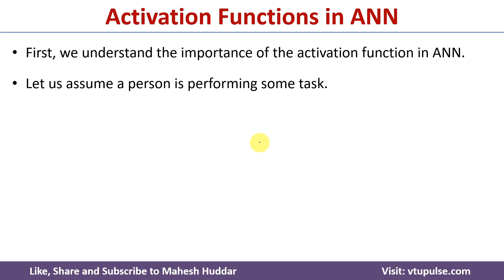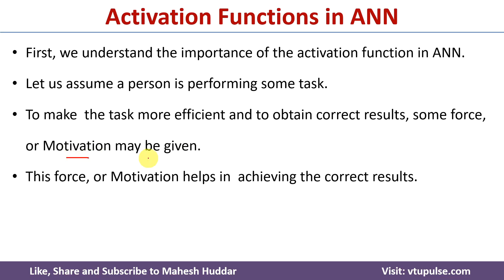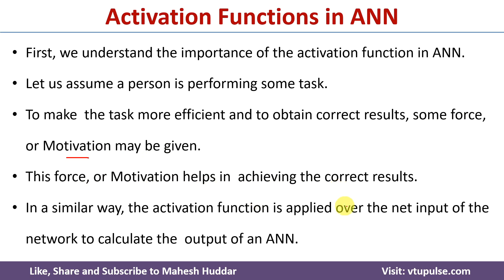Let us assume that a person is performing some task and if you want that particular task to be more efficient and to obtain the correct results, some force or motivation may be given. This particular force or motivation helps in achieving the correct results. Similarly, in artificial neural network, first we calculate the net input of the network. Net input is nothing but the summation of a product of weight and input, that is the summation of wi times xi, where xi is the input and wi is the weight of that particular edge.